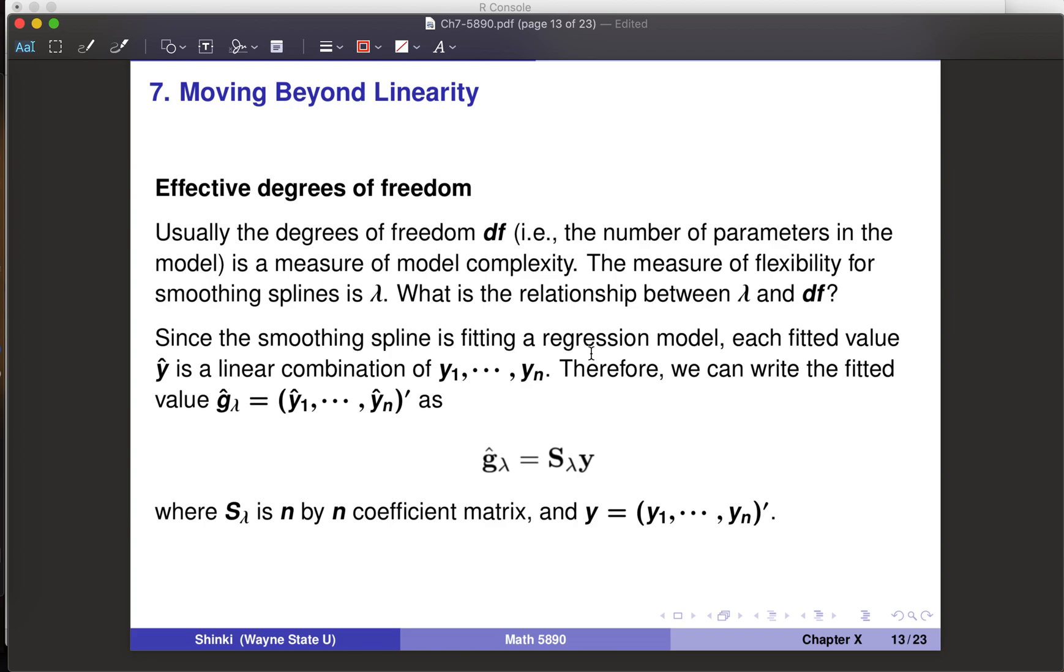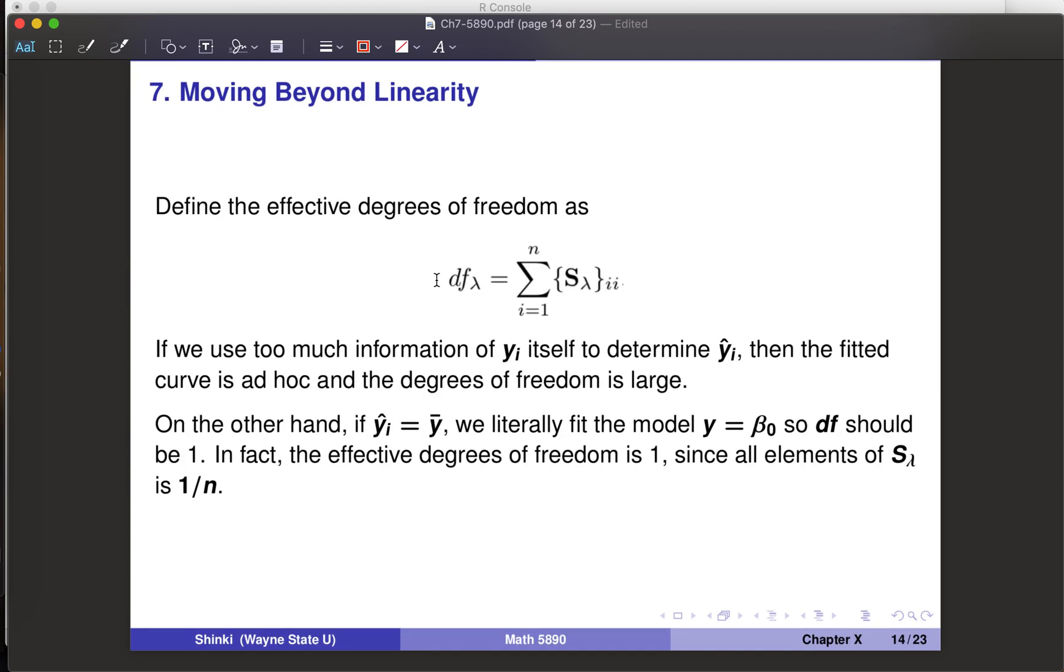Smoothing spline is still a regression model. We basically make some weighted average of observed responses, y1 to yn. Think about the fitted values, y1 hat to yn hat. This is some linear transformation of y1 to yn. We can write g lambda equals S lambda times y, where S lambda is an n by n coefficient matrix, and y is the original observations. Then we can define the effective degrees of freedom as df sub lambda equals summation of S lambda ii, the diagonal terms of this matrix S sub lambda.